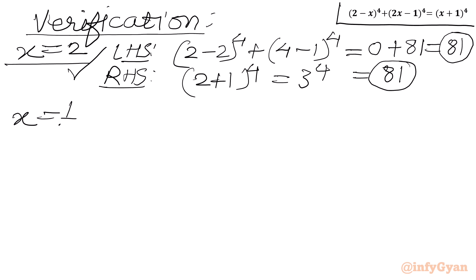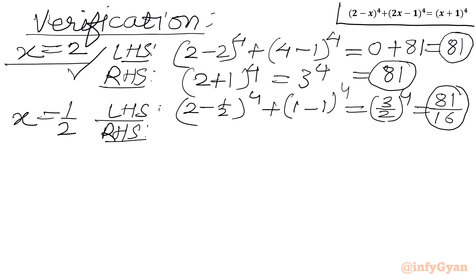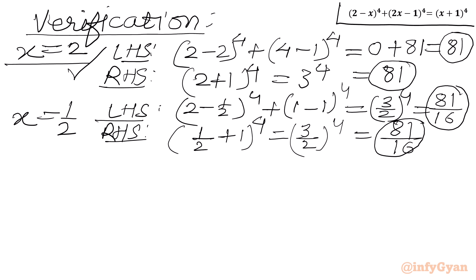Now check x equal to one half. LHS: (2 minus 1/2)^4 plus (1 minus 1)^4 equals (3/2)^4 plus 0 equals 81/16. RHS: (1/2 plus 1)^4 equals (3/2)^4 equals 81/16. This matches our LHS, so x equal to one half is also a verified solution.